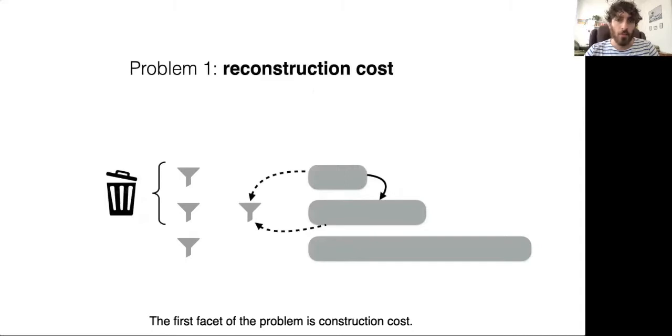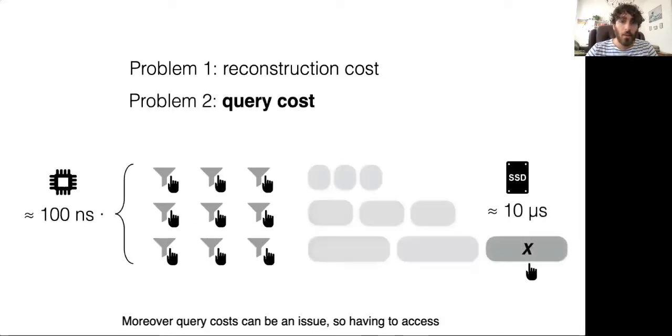The first facet of the problem is construction cost. Bloom filters are immutable and must be rebuilt from scratch for each merge operation. This can amount to a large overhead. Moreover, query costs can be an issue, so having to access each one of the Bloom filters in memory can approach or even exceed the latency of the SSD I/O eventually issued to retrieve the target entry from storage.